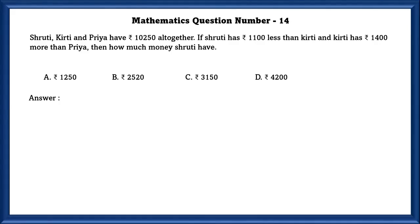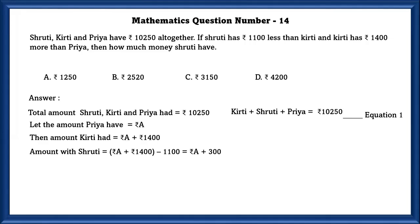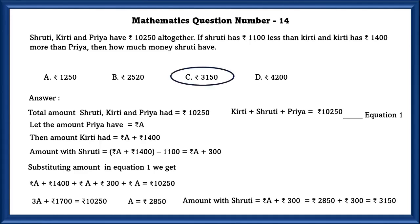Mathematics question number 14. Shruti, Kirthi, and Priya have 10,250 rupees altogether. Shruti has 1,100 less than Kirthi and Kirthi has 1,400 more than Priya. Let Priya's amount equal rupees A. Then Kirthi has rupees A plus 1,400, and Shruti has Kirthi's amount minus 1,100, which equals rupees A plus 300. Substituting into the total, A equals 2,850. So Shruti's amount is 2,850 plus 300, which equals 3,150 rupees. That's option C.